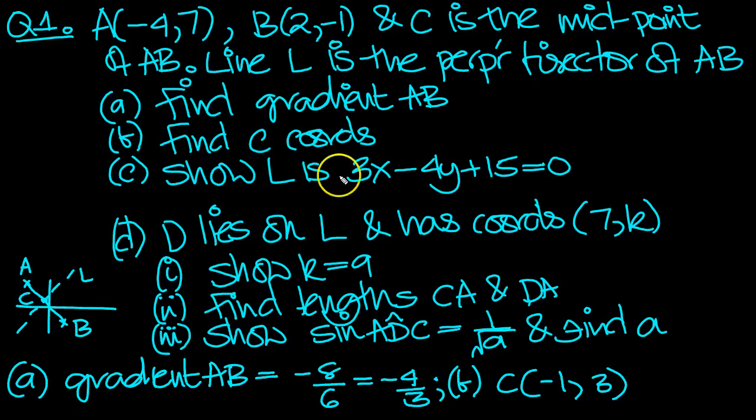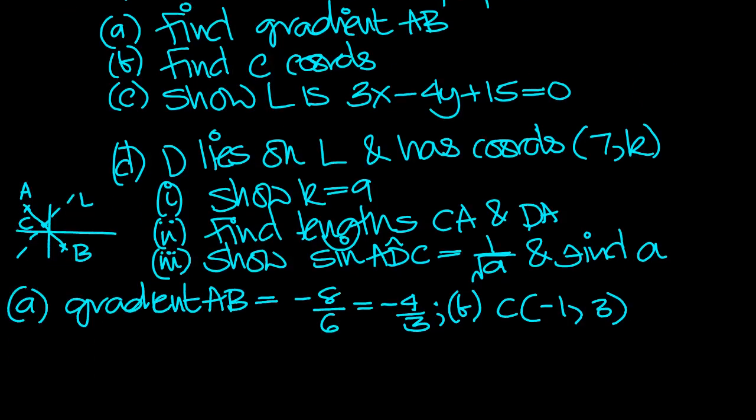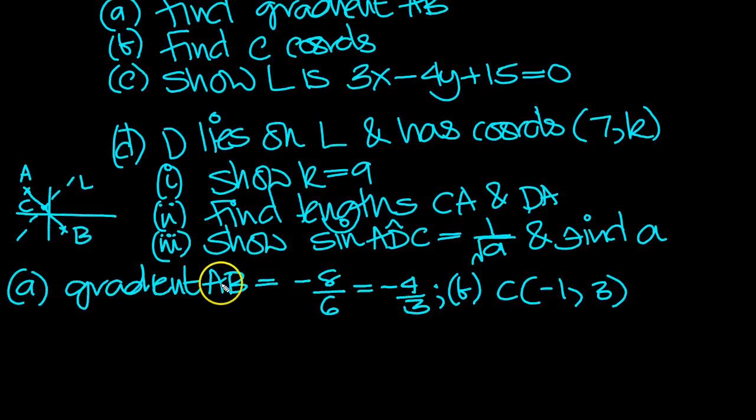Show that the line L is this line here. So line L, it's perpendicular to AB. So for part C, we need the equation of L. So here, y minus, now it goes through the midpoint C, so y - 3.